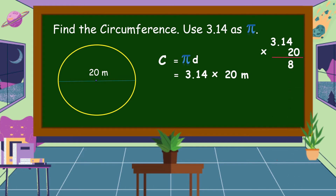2 times 4 is equal to 8. 2 times 1 is equal to 2. 2 times 3 is equal to 6. Then bring down 0. Let's count the decimal numbers in our factors. We have two decimal numbers in our factors, so we're going to affix two decimal places in our product. Therefore, the circumference is equal to 62.8 meters.